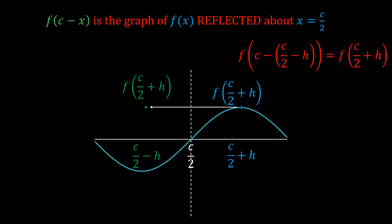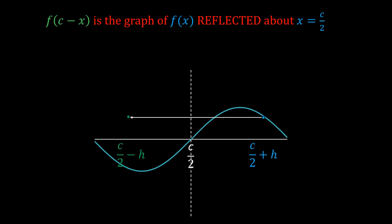So no matter what point you choose to the right of c/2 on the original graph, the reflected version of that point is on f(c-x).